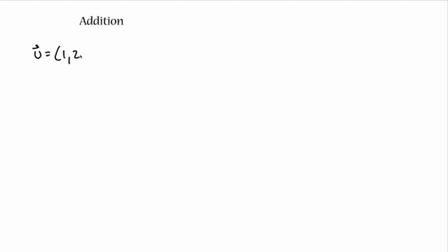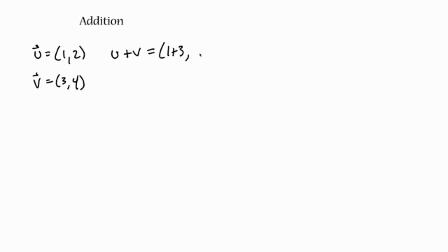Vector and matrix addition is pretty straightforward. You can only do addition if you have two vectors that are the same size. So if I've got vector u and another vector v, then u plus v is going to be the first element of each added: one plus three, and then the second elements added: two plus four, which equals four and six. You're just adding the elements together in order.